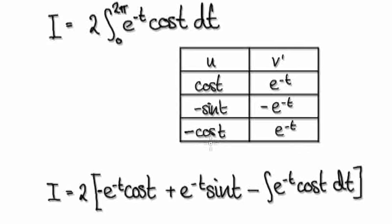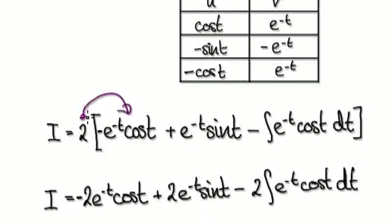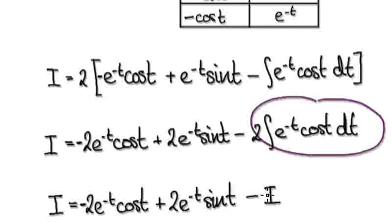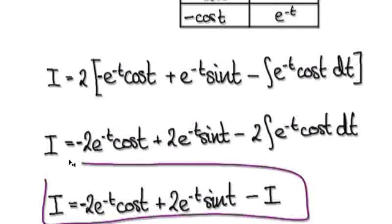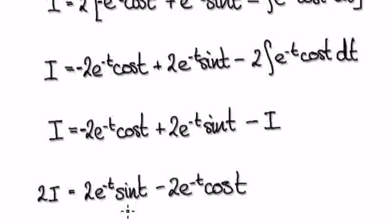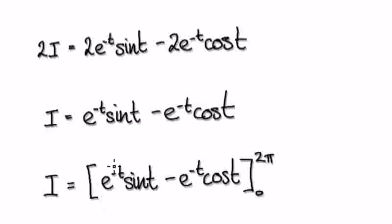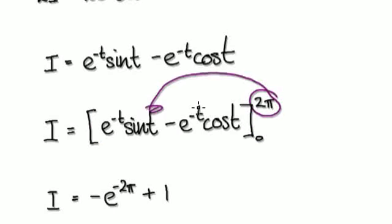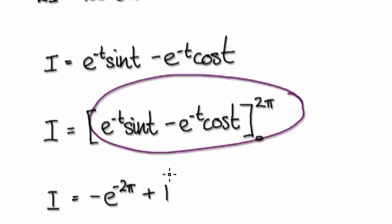Multiplying through — this times this times this times this — takes you to the next stage. We said earlier, let capital I equal this expression, and this term here is exactly that capital I. Then add capital I to both sides to get the result. Now evaluate the expression from 0 to 2π by substituting the limits and subtracting.